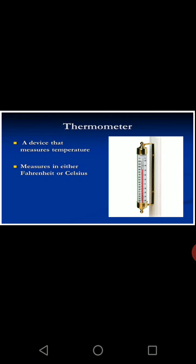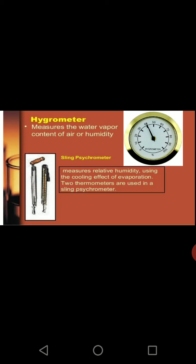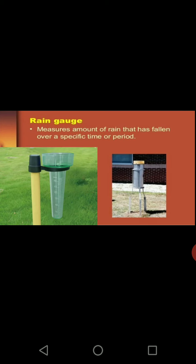This is the thermometer — a device to measure temperature, either in Fahrenheit or in Celsius. The regular thermometer we have at home is for body temperature, but this is the outdoor one. Hygrometer: when we say hygrometer, it measures how much moisture is present in the air or atmosphere — that is humidity.